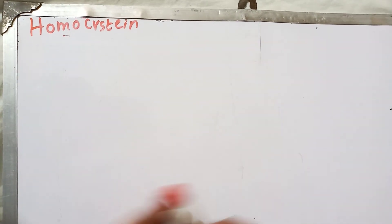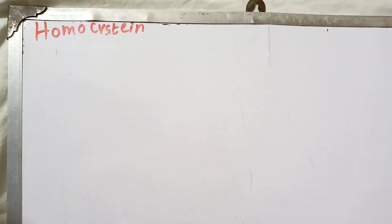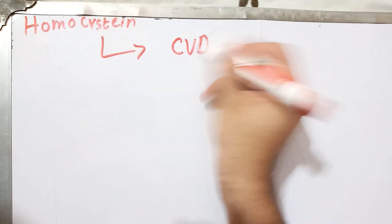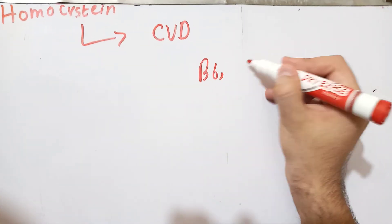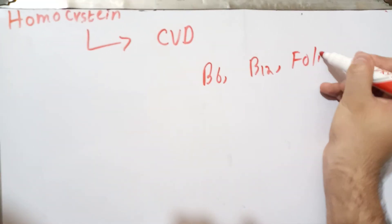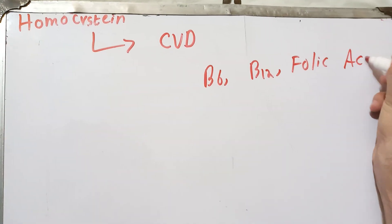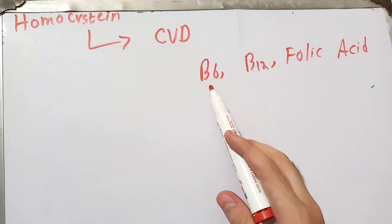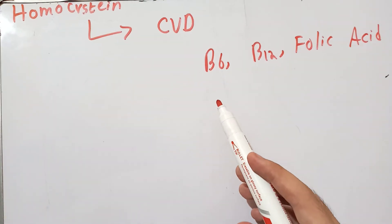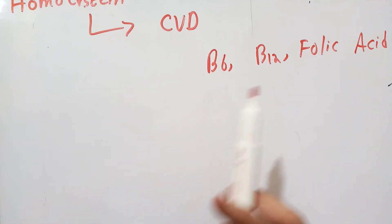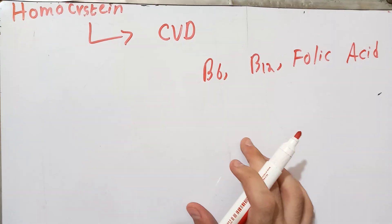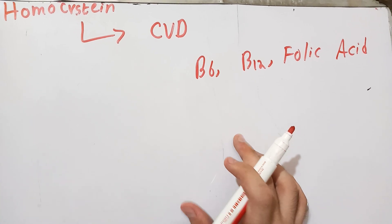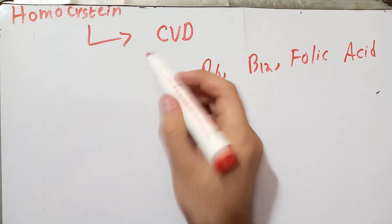Now let's discuss the clinically important aspects related to homocysteine. Accumulation of homocysteine in body fluids is associated with cardiovascular diseases, though the exact mechanism is not fully known. Deficiency of any of the enzymes or vitamins involved — B6, B12, or folic acid — leads to homocysteinemia, meaning homocysteine concentration increases in body fluids, raising the incidence of cardiovascular disease.